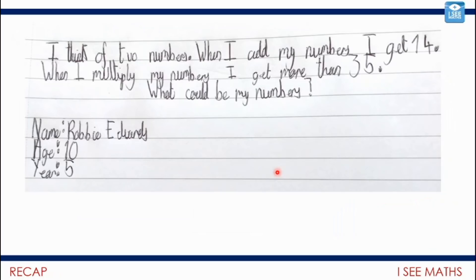I also had this one coming through from Robbie as well. So we'll have a go at this one. I think of two numbers. When I add my numbers, I get 14. When I multiply my numbers, I get more than 35. What could my numbers be? Can you come up with an answer or different possible answers? Or do you know how many answers there are to Robbie's question? Pause the video and have a go.